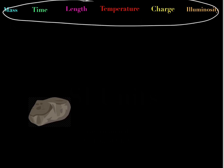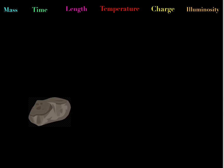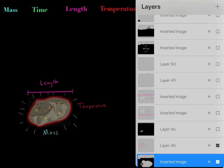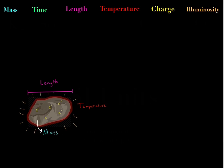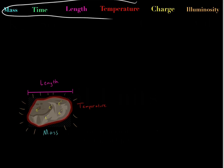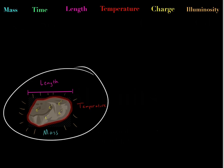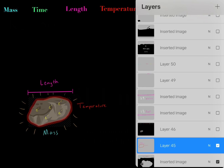There are six variables that make up everything in our known universe. For example, if we look at this rock, we know it has a mass, a certain length, a temperature — it's radiating heat — and it also has charge in the form of negatively charged electrons and positively charged protons, and it has a luminosity. So these six variables can describe and make up everything in our known universe.